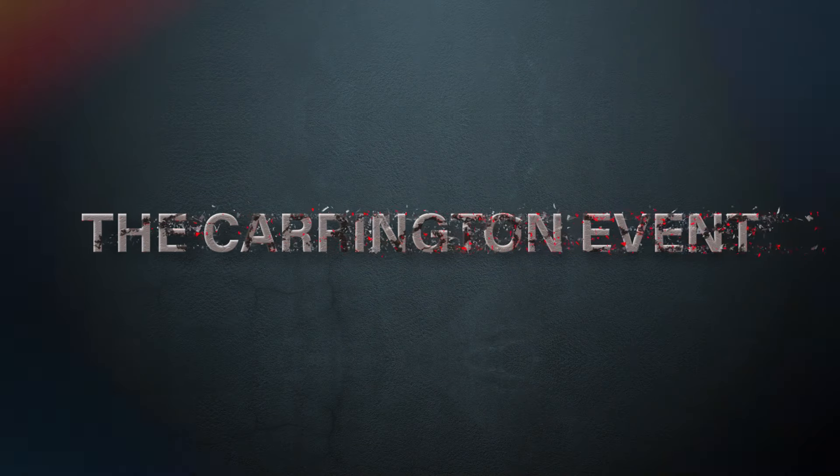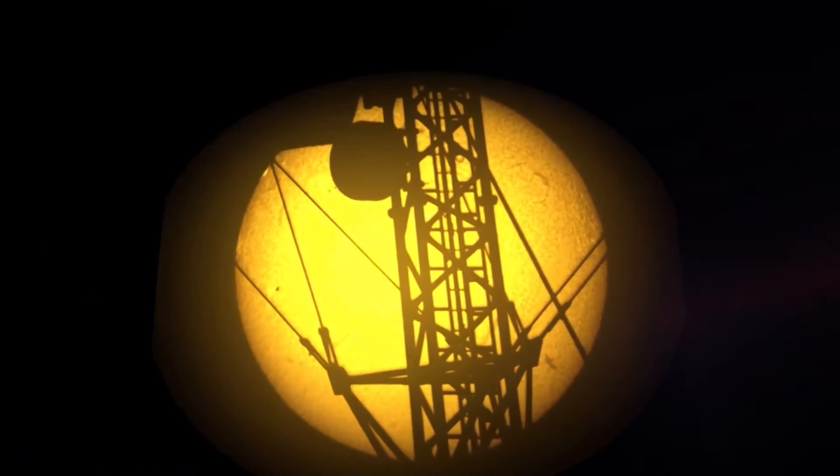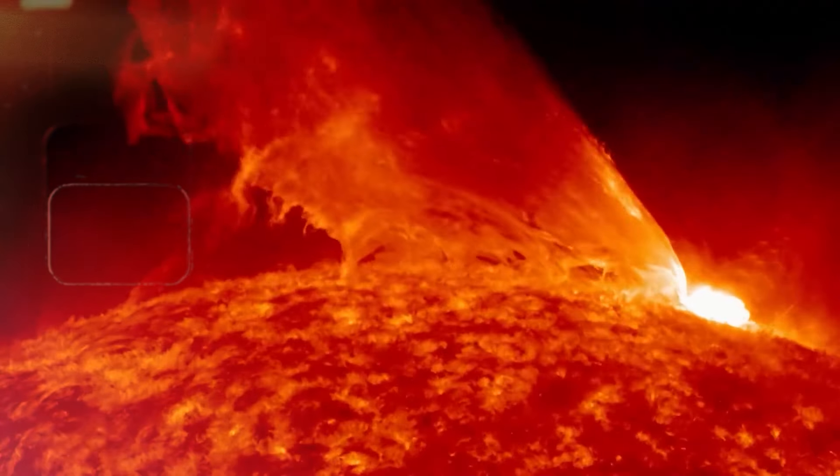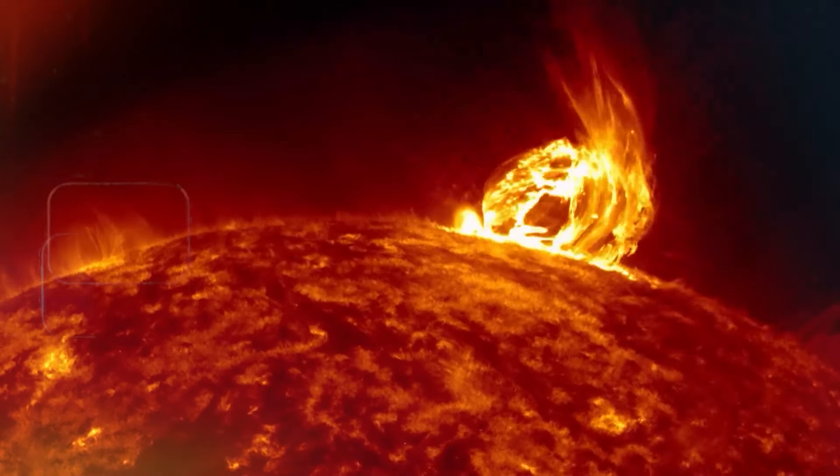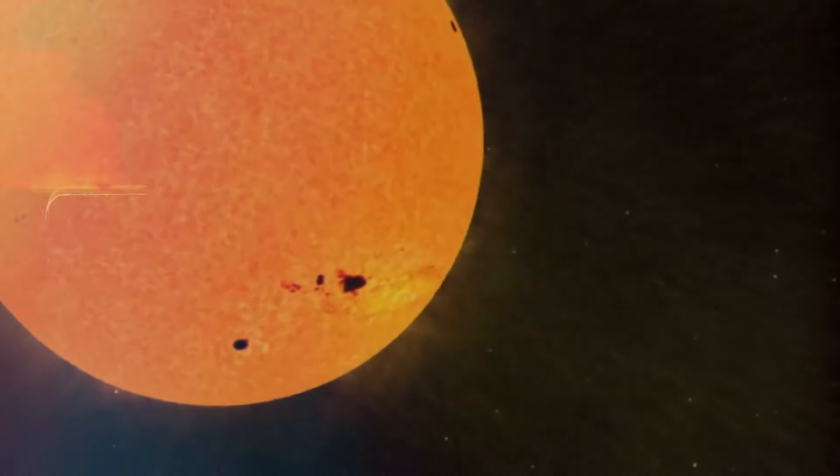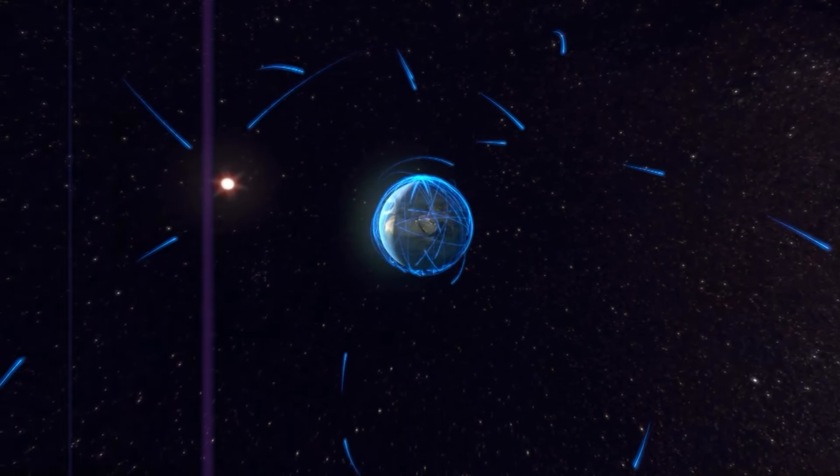The Carrington event, a historical prelude. In the late summer of 1859, Richard Carrington, a British astronomer, was engrossed in his daily observations of the Sun. As he meticulously sketched the sunspots, a sudden flash of light caught his eye, a brilliant white flare erupting from the solar surface. Unbeknownst to Carrington, this event would soon unleash a geomagnetic storm of unprecedented magnitude upon the Earth.